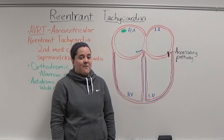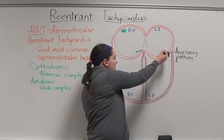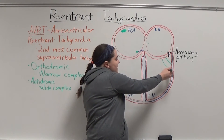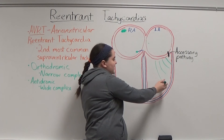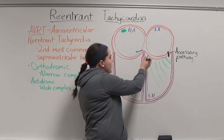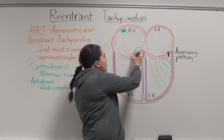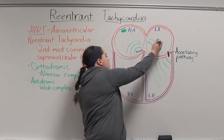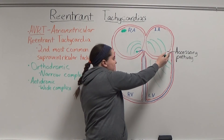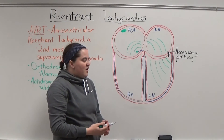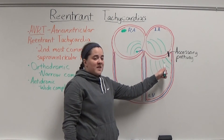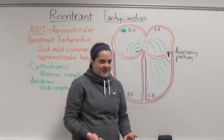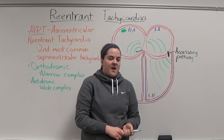In antidromic AVRT, the impulse goes from the atria across the accessory pathway, where it begins cell by cell depolarization of the ventricles. The impulse then goes up the bundle of His to the AV node, where it begins a cell by cell depolarization of the atria. When the impulse reaches the accessory pathway, the cycle begins again. Because it's a cell by cell depolarization through the ventricles, it's a wide complex tachycardia and is often confused for VTach.